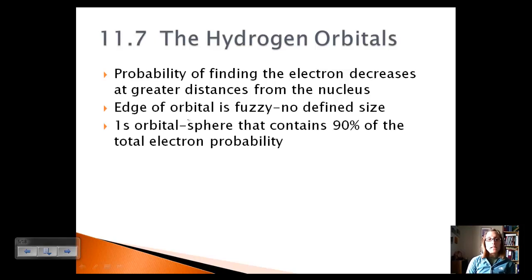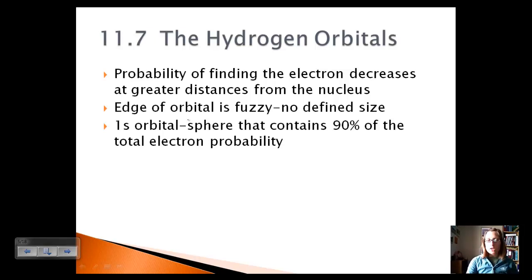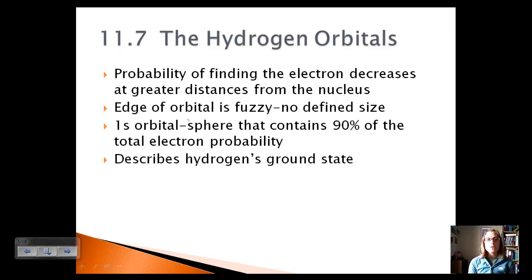We can have different levels of energy and shapes of orbitals. The 1s orbital is a sphere shape and it contains 90% of the total electron probability. So 90% of the time electrons are in this sphere shape in a 1s orbital. This describes hydrogen's ground state, which is the lowest energy orbital you can have — lowest energy means ground state.